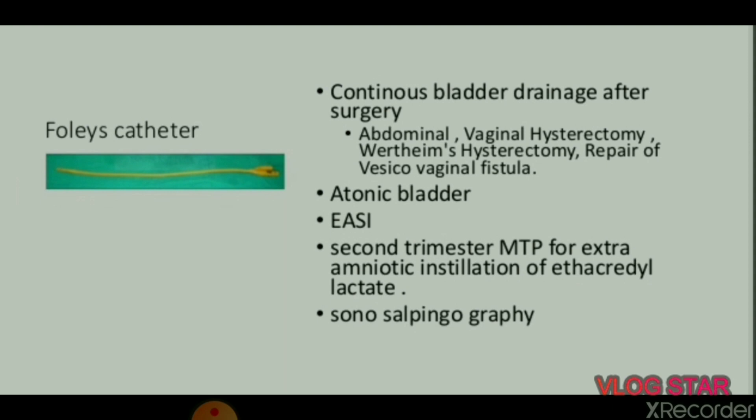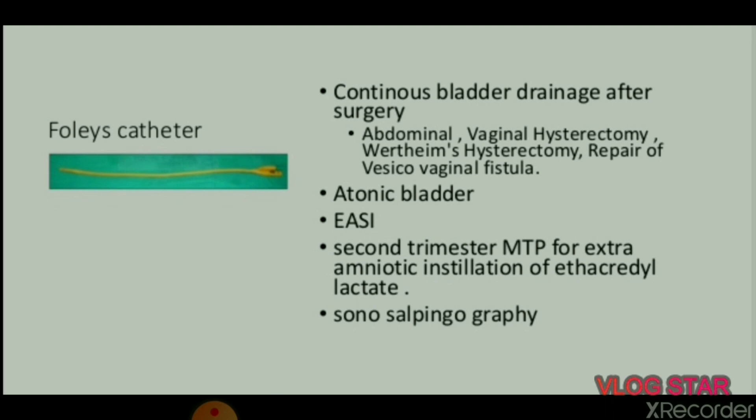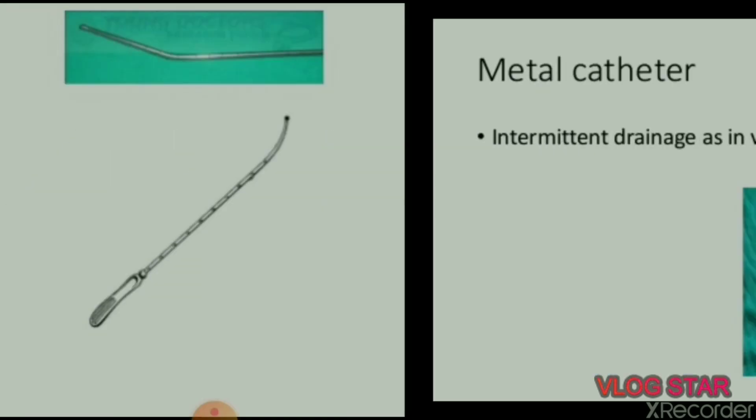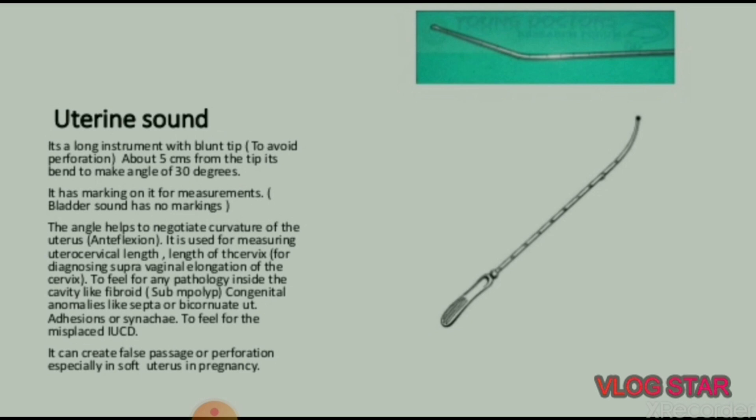Next: scissors — Mayo scissors curved, Mayo scissors straight, episiotomy scissors. Catheter types: Malecot catheter, Foley's catheter which provides continuous bladder drainage after surgery including abdominal and vaginal hysterectomy, Wertheim's hysterectomy, repair of vesico-vaginal fistula, atonic bladder. In second trimester MTP, used for extra-amniotic installation of ethacridyl lactate and sonosalpingography.